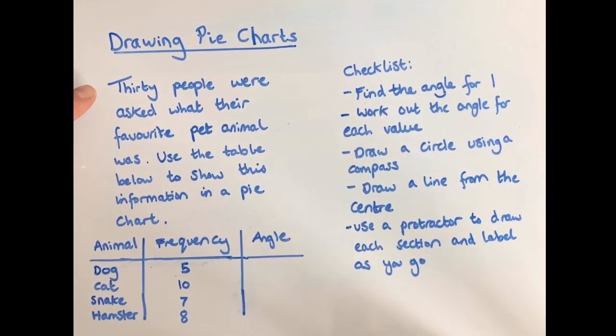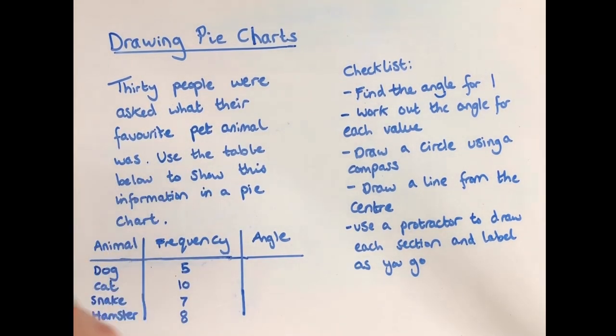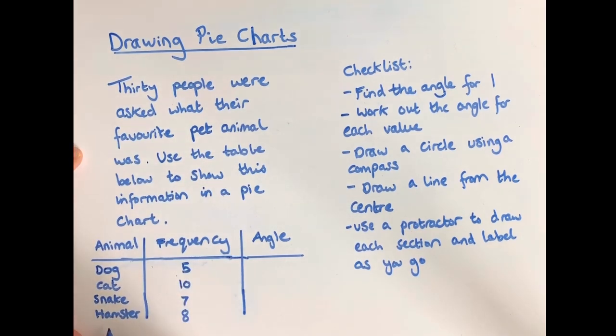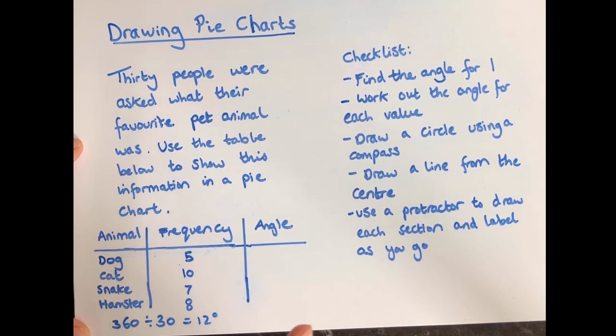So our question says 30 people were asked what their favourite pet animal was. Use the table below to show this information in a pie chart. So I have my information here, my checklist says I'll find the angle for one. So the total was 30, so I would do 360 divided by 30, which equals 12 degrees. So one person would be the same as 12 degrees on a pie chart.